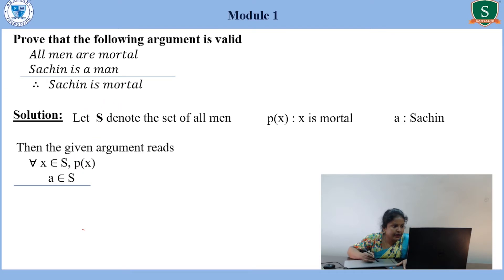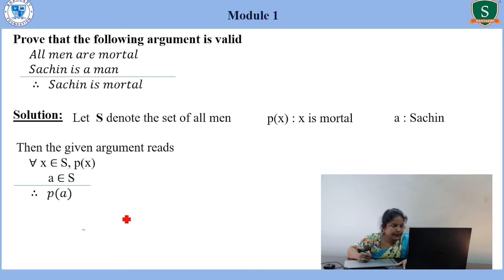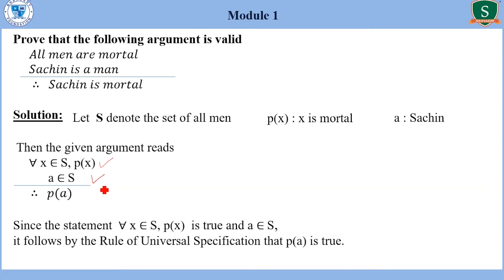Since the statement 'for all X belongs to S, P(X)' is true, and A belongs to S is also true, it follows the rule of universal specification — that is, P(A) is true. In the rule of universal specification, if for all X belonging to S, P(X) is true, and A belongs to S, then P(A) is true. Therefore, the given argument is valid.